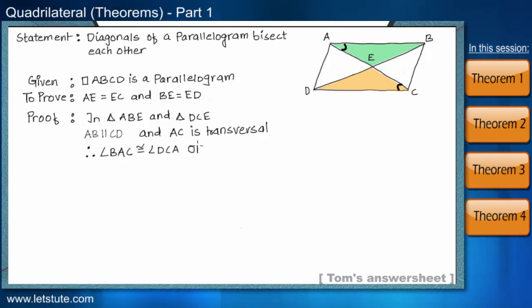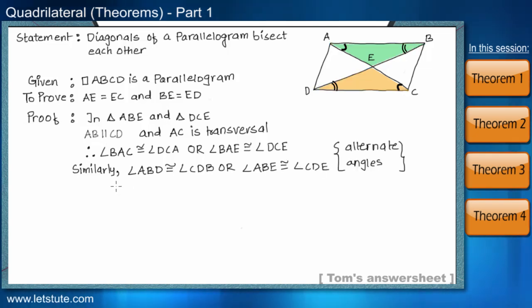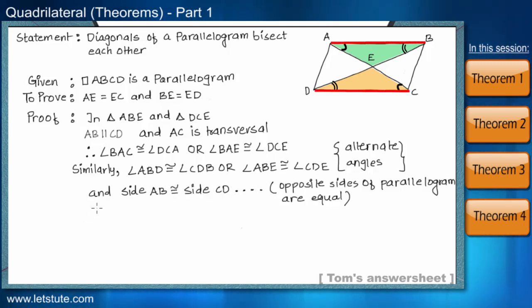Here again the angle BAC and angle DCA. Which can also be written as, angle BAE is equal to angle DCE. And similarly the other pair of alternate angles. Angle ABD is equal to CDB. Can also be written as, angle ABE is equal to angle CDE. And as he proved that, the lengths of the opposite walls are equal. Therefore, side AB is equal to side CD.